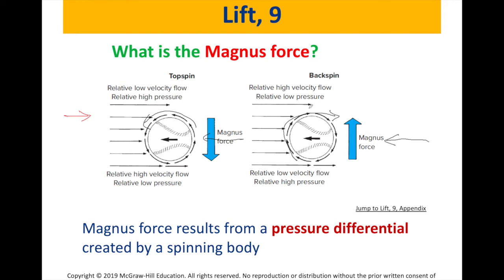If the fluid flow is going in that direction and the object is spinning this way, the speed is going to be in the same direction on the top part of the object, meaning high velocity on the top. On the bottom, the spinning is going in the opposite direction of the fluid flow, creating low velocity. According to Bernoulli's principle, low velocity means high pressure, and high velocity means low pressure. Since lift goes from high pressure to low pressure, the Magnus force is going up, and the object will move upward.